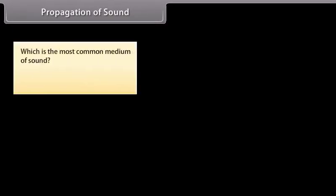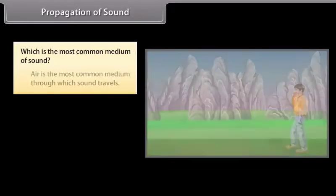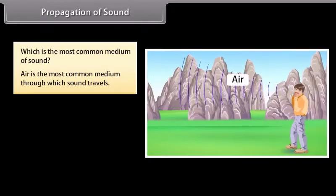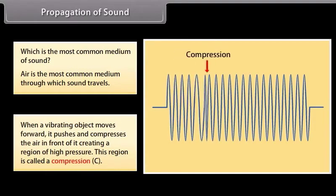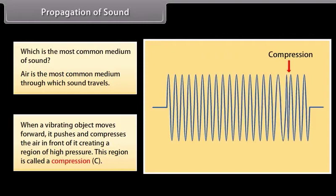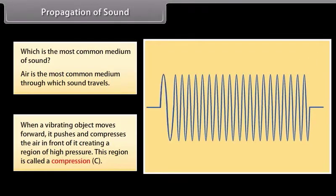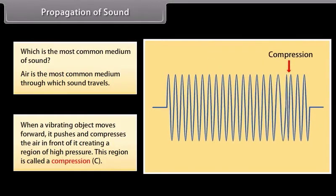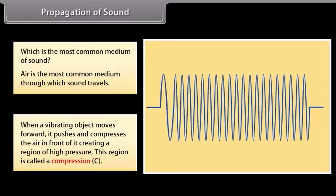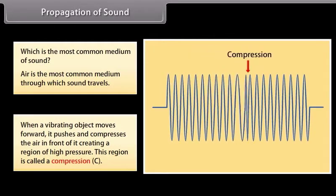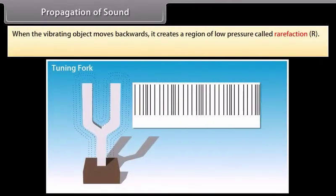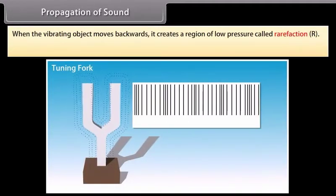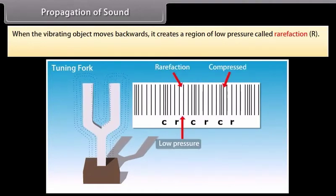Can you tell the most common medium of sound? Air is the most common medium through which sound travels. When a vibrating object moves forward, it pushes and compresses the air in front of it, creating a region of high pressure. This region is called a compression. And when the vibrating object moves backwards, it creates a region of low pressure called rarefaction.